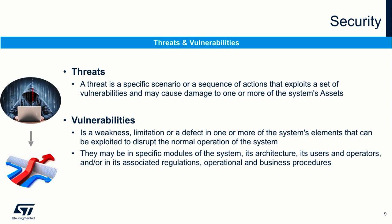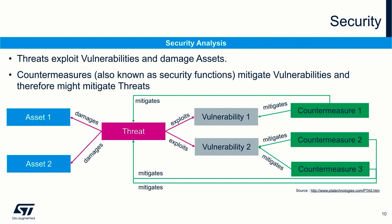Vulnerabilities could reside in different places — they may be in specific modules of the system, in its architecture, its users and operators, in its associated regulations, or even in the operational and business procedures. A security analysis procedure should be put in place to first understand what assets are to be protected, what kinds of threats exist, and what damages could be caused. Then identify the system vulnerabilities that could be exploited by those threats, and finally find countermeasures that could be put in place to mitigate the vulnerabilities and threats.